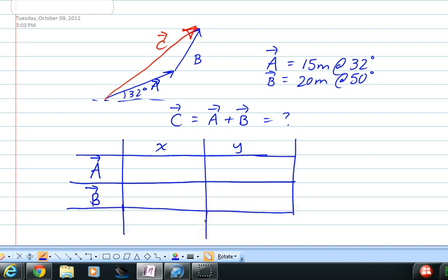And so I'll just write it in the box that the x component of vector A, which is right here, is going to be basically 15 cosine of 32. And that's going to give us about 12.7. And the y component is going to go right here. And that's going to be 15 sine of 32, or about 7.9.